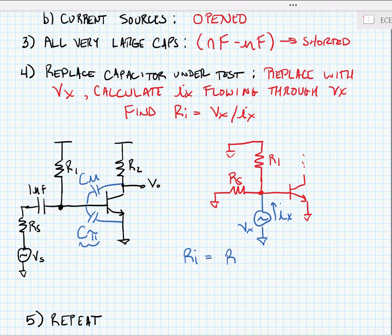And then our time constant tau sub I is just equal to the capacitor we were analyzing, C pi, times that resistance.